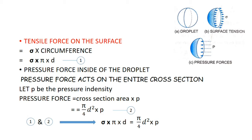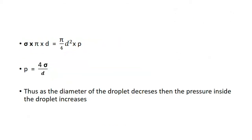Equating the total tensile force and the pressure force: sigma × π × d = (π/4) × d² × p. Upon rearranging and cancelling common terms, we get the pressure intensity inside the droplet: p = 4σ/d. Since diameter is in the denominator, if the diameter of the droplet decreases, the pressure intensity inside the liquid droplet increases.